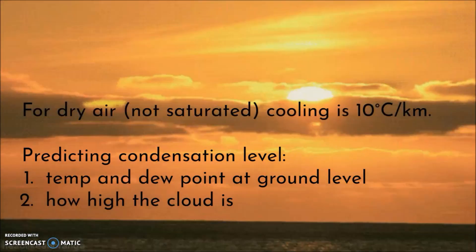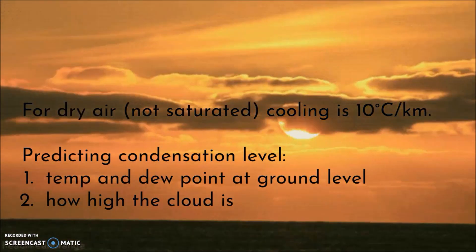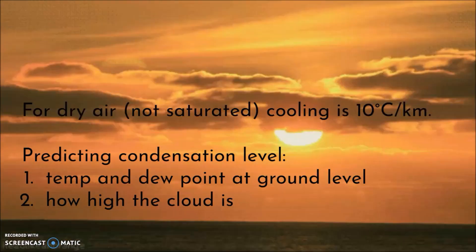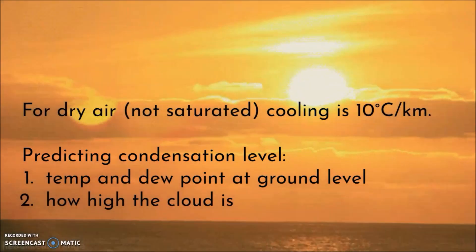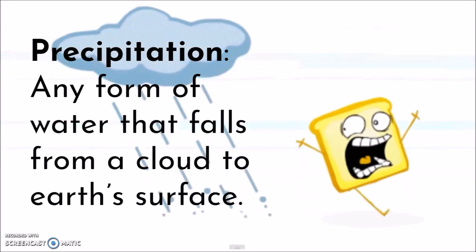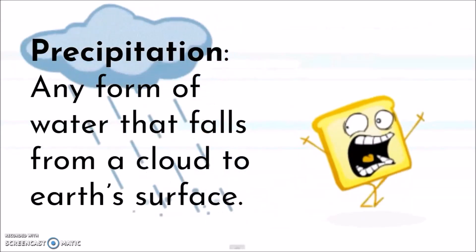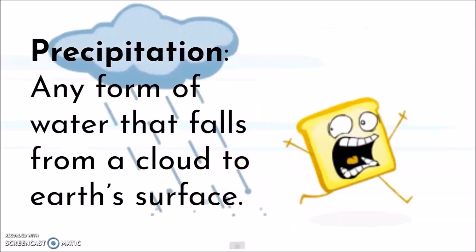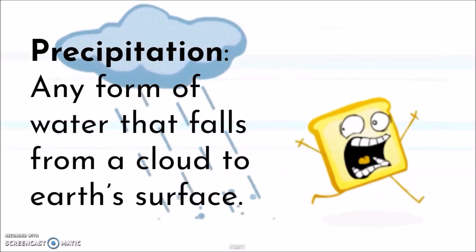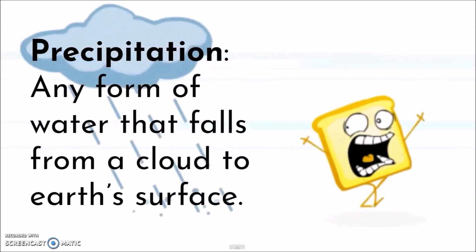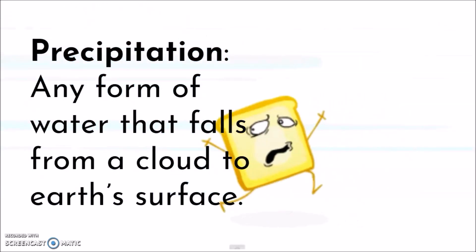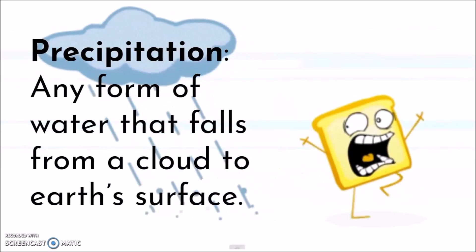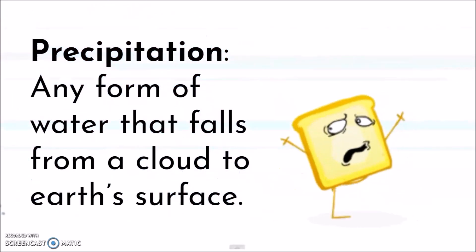At which point in the atmosphere is this water going to turn from vapor back into water? When water droplets or ice crystals in clouds grow heavy enough to fall, precipitation occurs. Precipitation is any form of water that falls from a cloud to Earth's surface, like rain, snow, sleet, and hail.